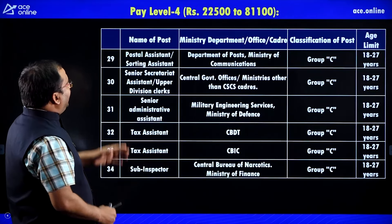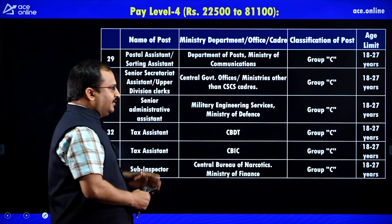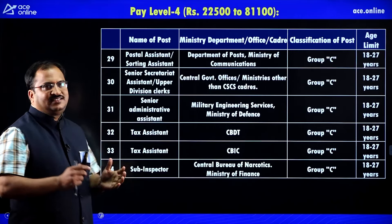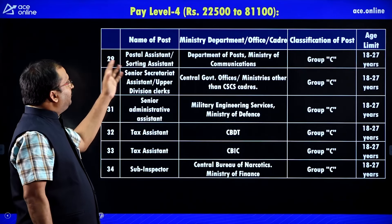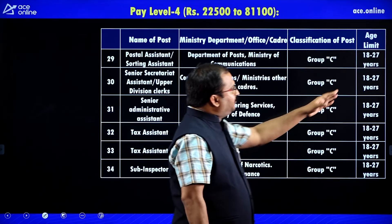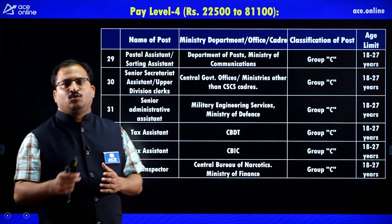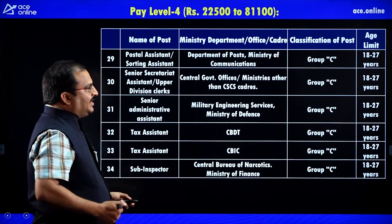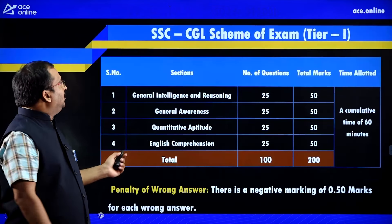Pay Level 4 has a pay band of ₹22,500 to ₹81,100. There are certain assistant level posts including Tax Assistant, Sub Inspectors, and Postal Assistant. The age limit is between 18 to 27 years and these posts are under Group C category. These are all the different pay levels and the posts available.